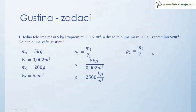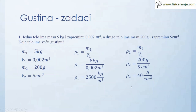Gustina drugog tela će biti M2 kroz V2. Umjesto M2 pišem 200 grama, a umjesto V2 5 cm³. 200 podeljeno sa 5 je 40 grama po centimetru kubnom. Dobio sam gustinu drugog tela.